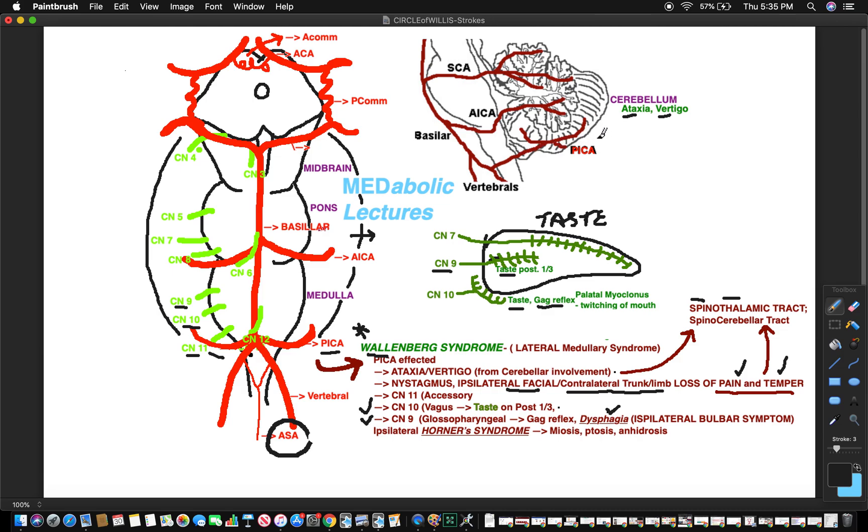If you have infarction let's say right here, you are going to infarct the spinothalamic tract that's running through this going all the way up to the thalamus. You are going to infarct the spinocerebellar tract right here. This is why you have symptoms of vertigo and ataxia as well.